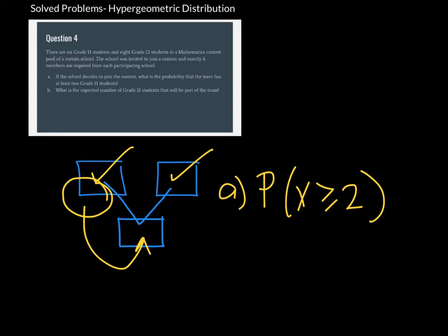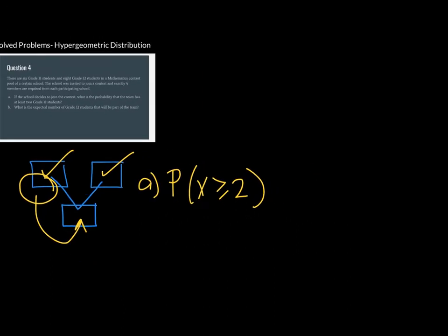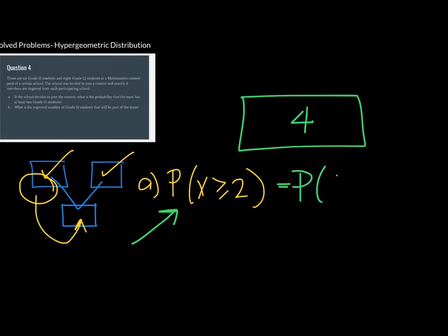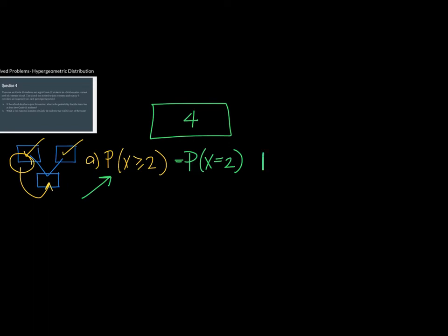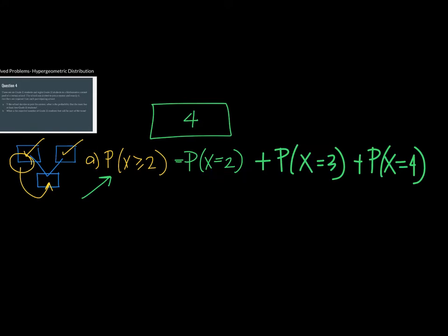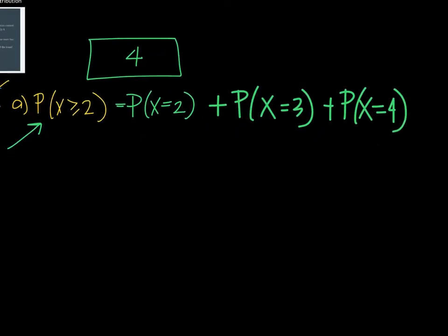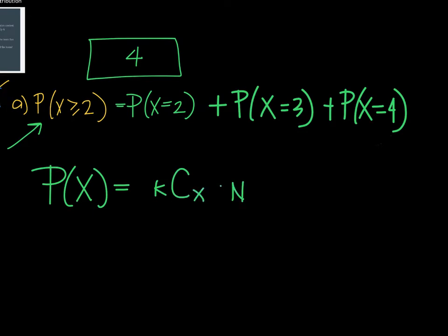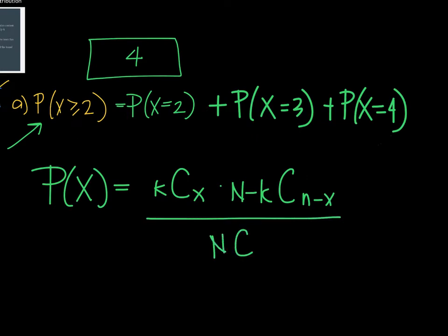In solving this probability, we have to consider that the team should have 4 members. If we want at least 2 grade 11 students, this probability equals P(x=2) plus P(x=3) plus P(x=4). In a hypergeometric distribution, the formula for P(x) is: K choose x, times (N minus K) choose (n minus x), all over N choose n.